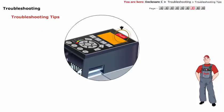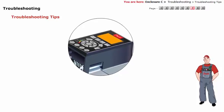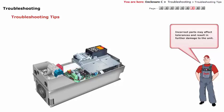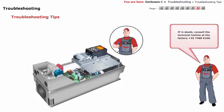Tip 4: Always use factory-approved replacement parts. The drive has been designed to operate within certain specifications, and incorrect parts may affect tolerances and result in further damage to the unit. A thorough understanding of the application in which the unit is used is the best approach. If in doubt, consult the technical hotline at the factory: 4574-886100.